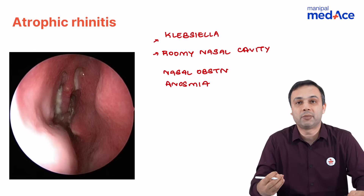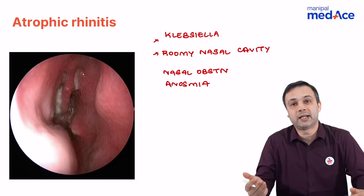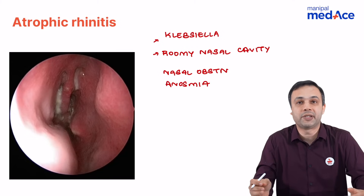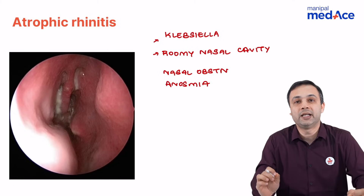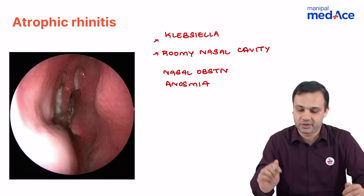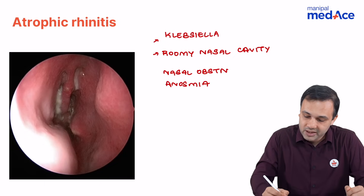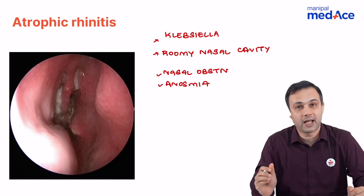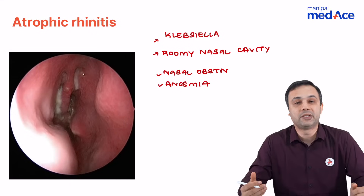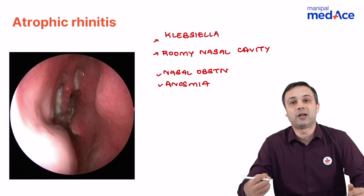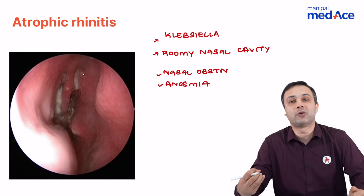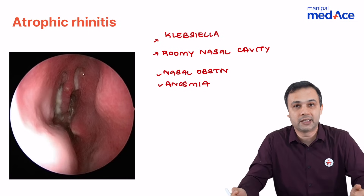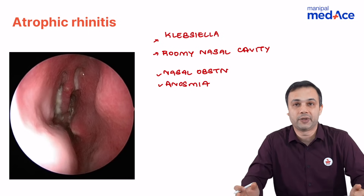They also come with anosmia — more famously known as merciful anosmia. The patient is not able to have any sensation of smell, but the bystanders and people surrounding the patient complain of a very foul smell. This happens because of atrophy of the turbinates, atrophy of the mucosa, and atrophy of the nerve endings in atrophic rhinitis.